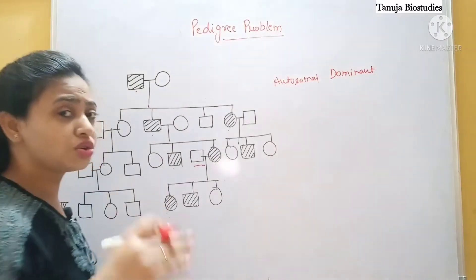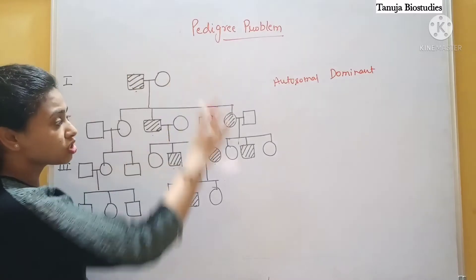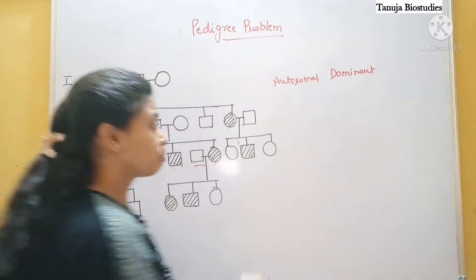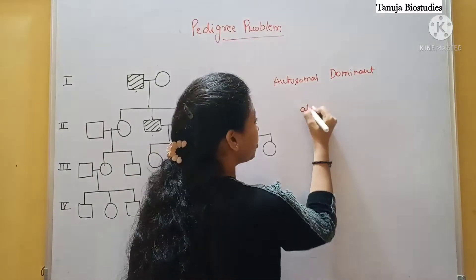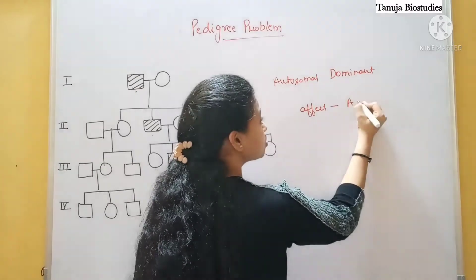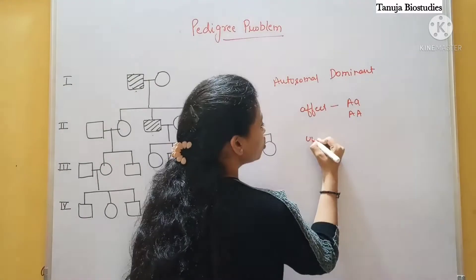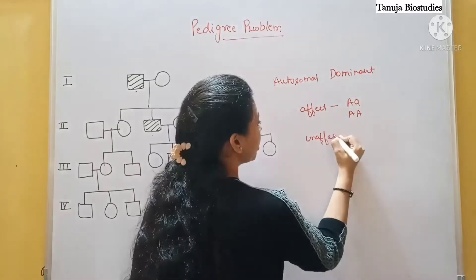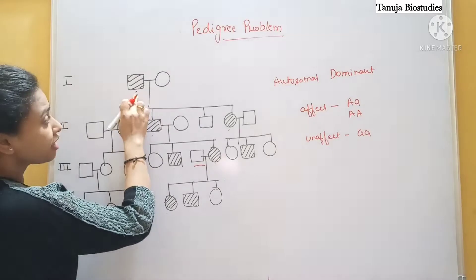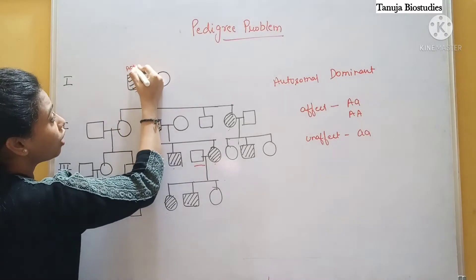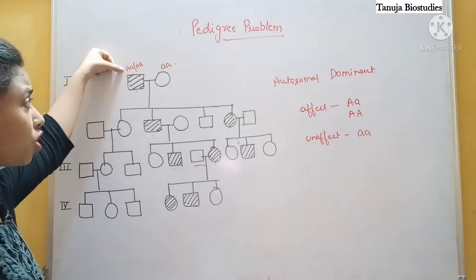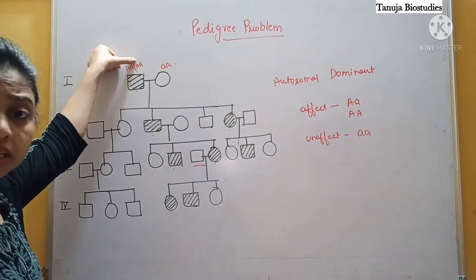So this one was very easy. Let's write down the genotype to make it clear. Because this is autosomal dominant, I will tell you about the affected trait. The affected individuals will be shown with capital A, and the unaffected trait will be shown as small a, small a. Now I have a question about what we have written - is it capital A, small a, or capital A, capital A? Which one will come?